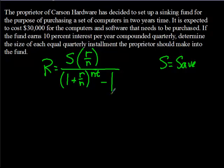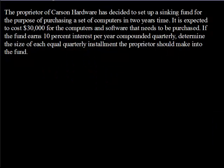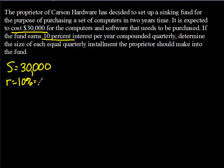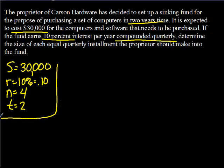Pulling out the information we need: they are planning to save $30,000, so capital S equals $30,000. The interest rate is 10%, so lowercase r equals 0.10. It says compounded quarterly, so we're making quarterly payments, meaning lowercase n equals 4. And they plan to do this in 2 years, so t equals 2.